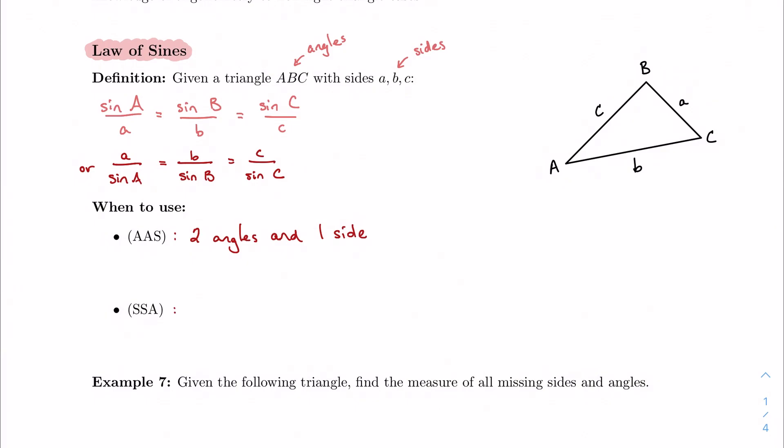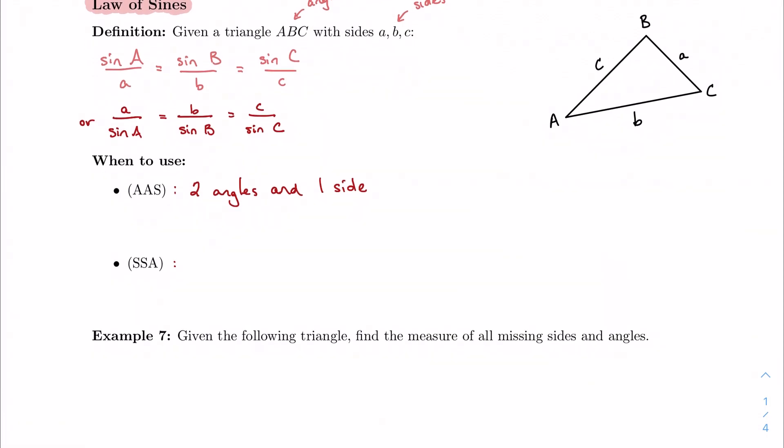And then side side angle, and this is where kind of the placement really matters of the letters here - two sides and a non-included angle. So that's the key - that just means that if I'm given, say, B and C, then I can't also be given A if I want to use the law of sines, because it's the angle that comes between B and C.